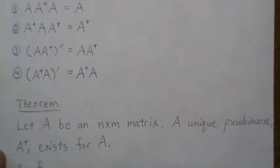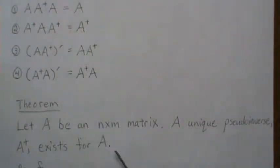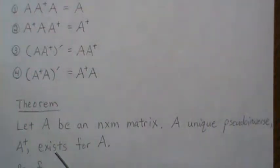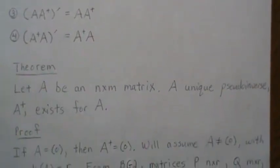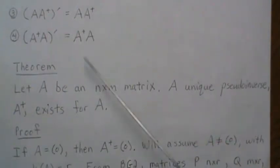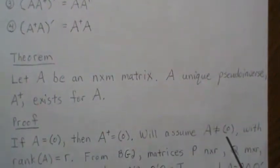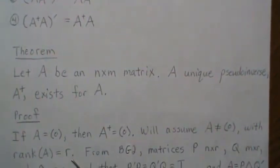So let's look at a theorem. Let A be an n-by-m matrix. Then a unique pseudo-inverse, called A-plus, exists for A. There are really two properties to establish: one, that the pseudo-inverse exists, and two, that it's unique. For existence, if A is the zero matrix then the pseudo-inverse is the zero matrix and it satisfies all requirements — that's trivial. So we'll assume A is not zero and has rank R.